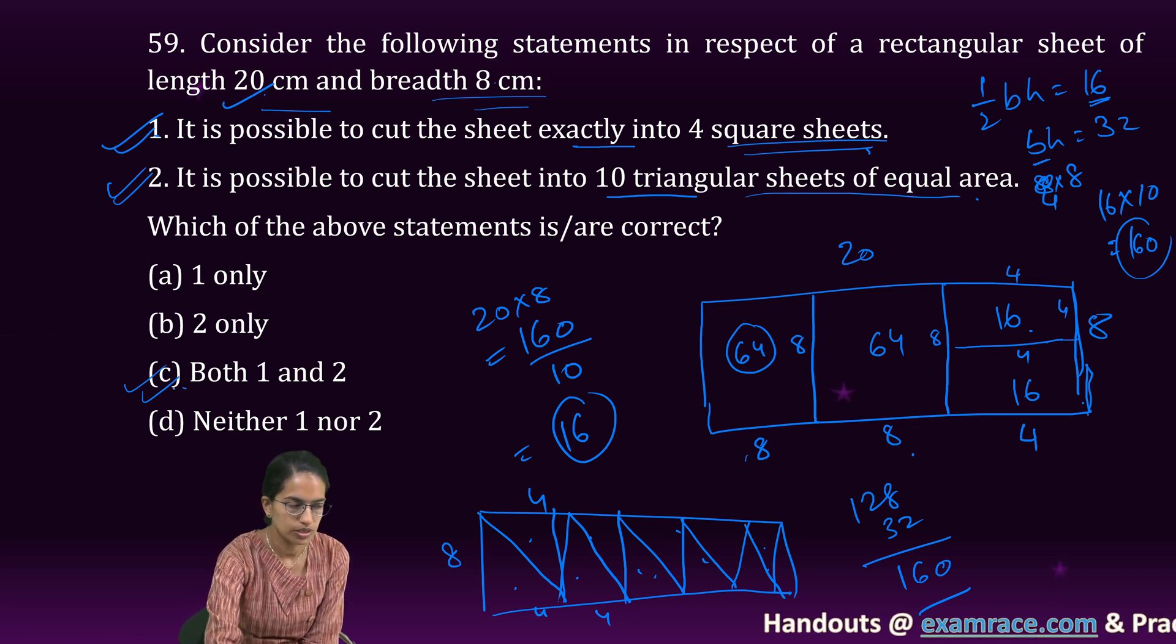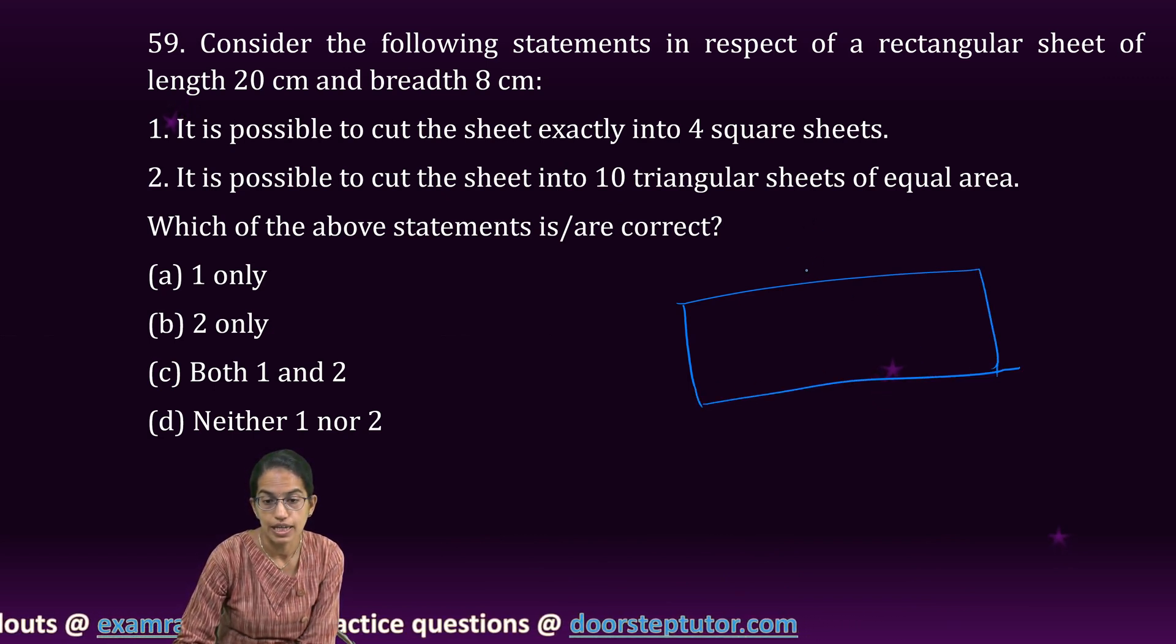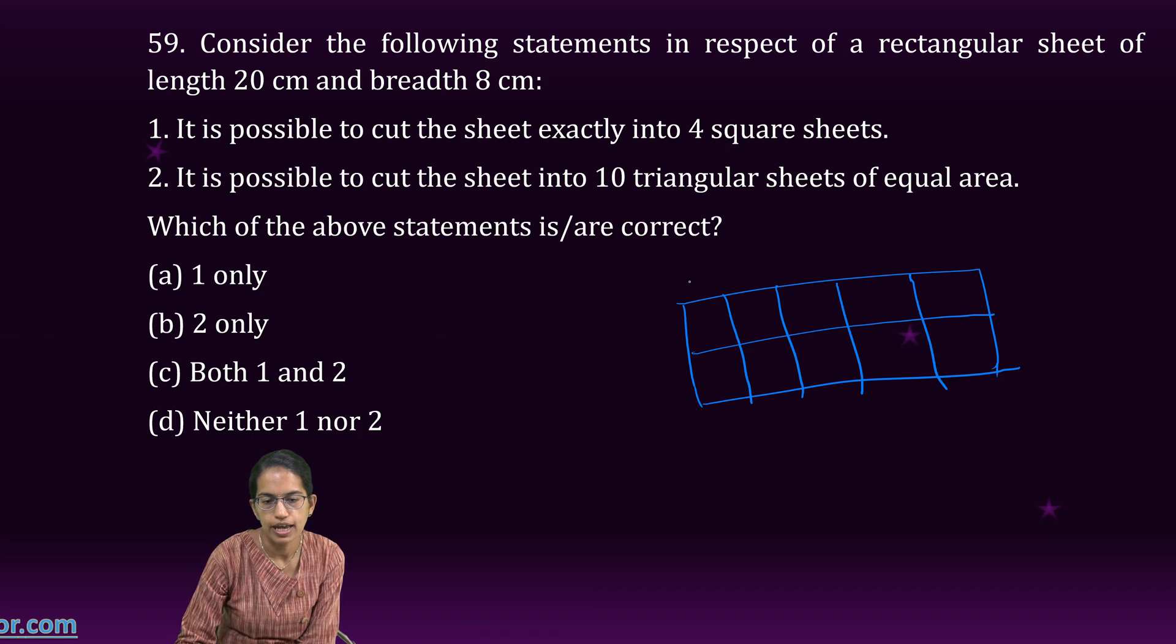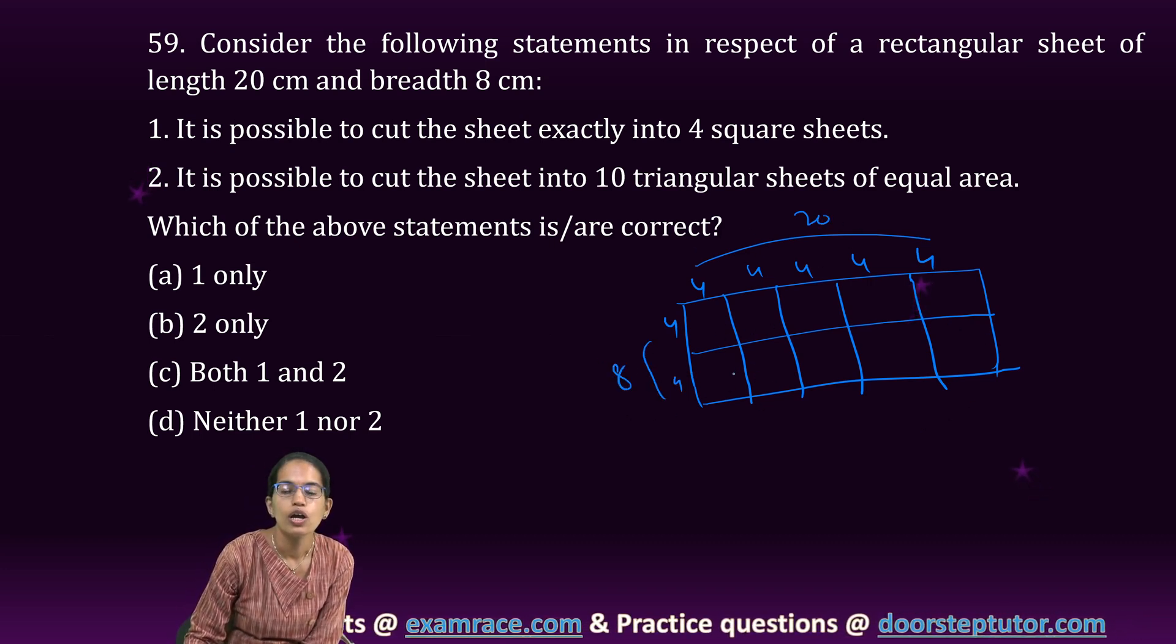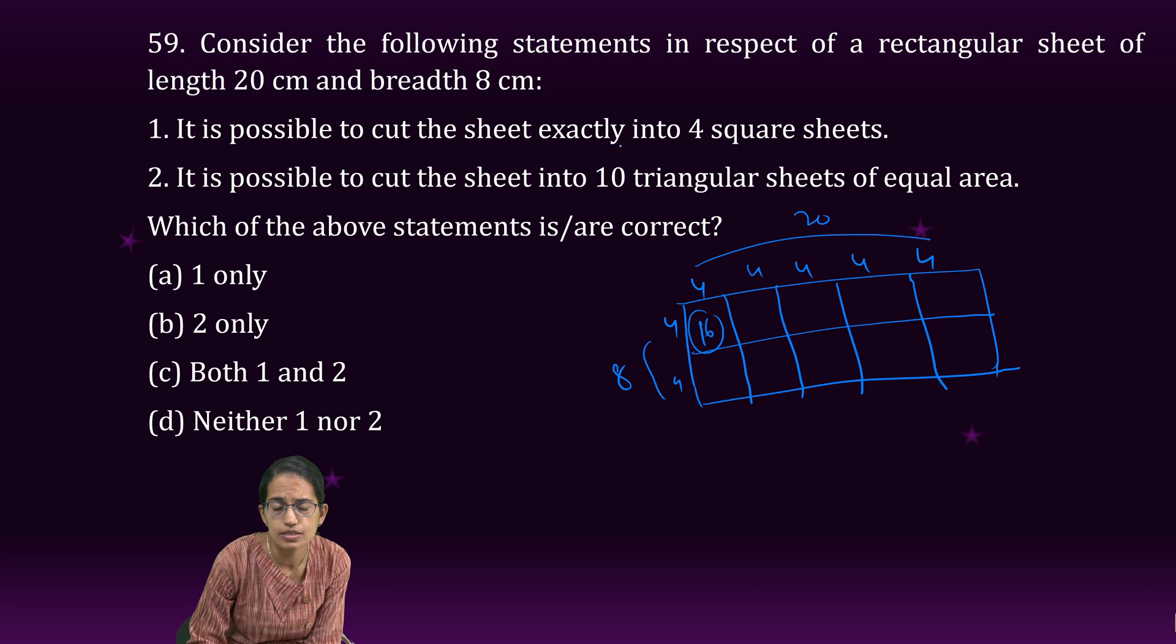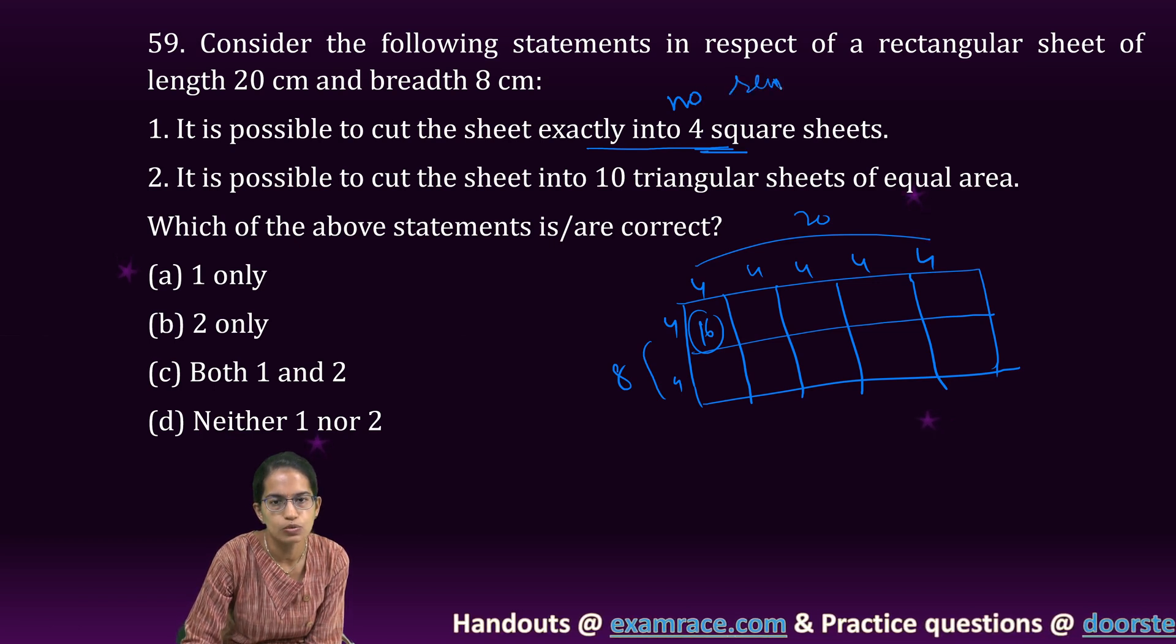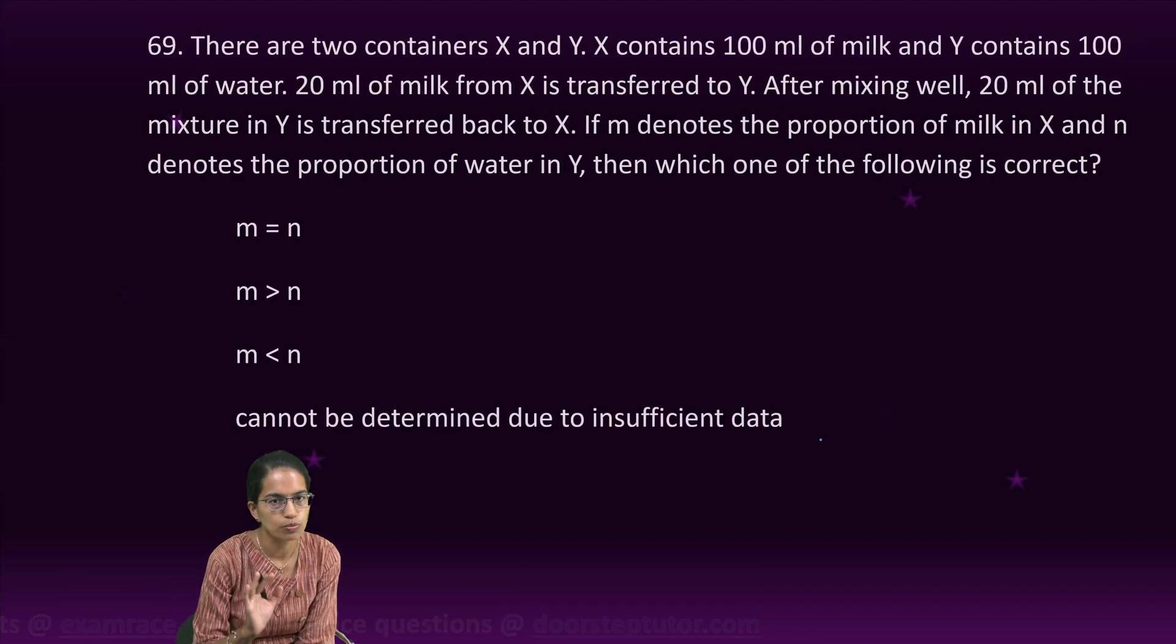Both are possible solutions. I can also have 10 square sheets of 4 by 4, which gives 16 centimeter square each. Since the question is not talking about equal squares, just exactly into squares with no remainder, the number should be such that all should be some size of a square. Both statements are correct.